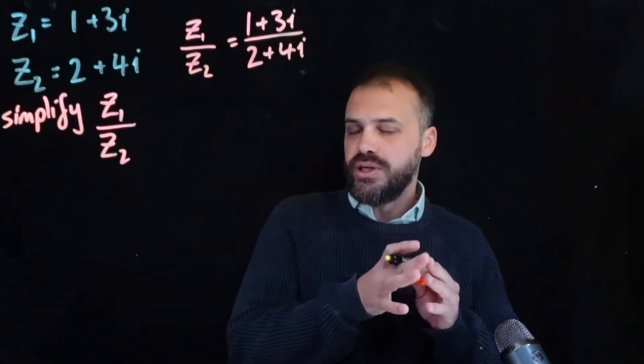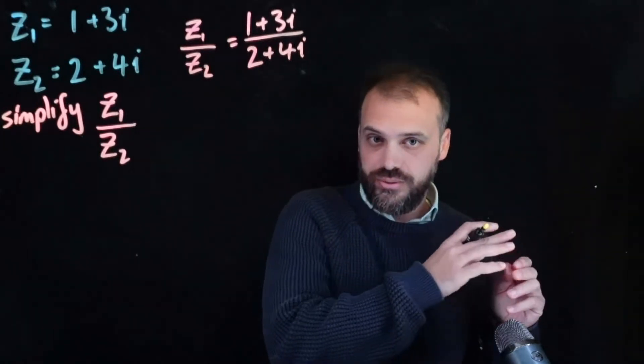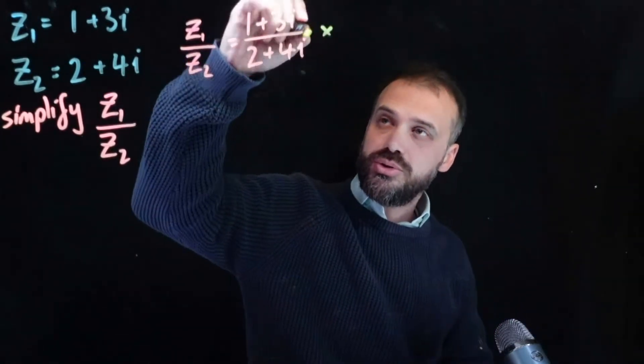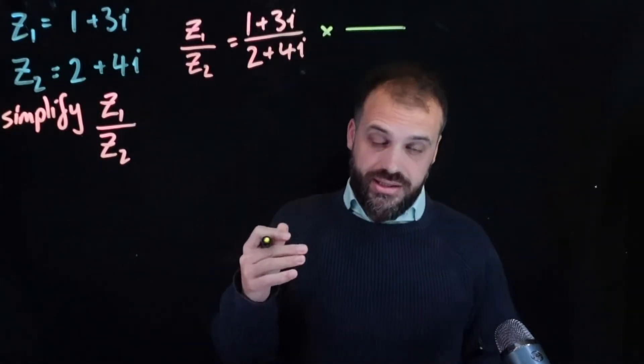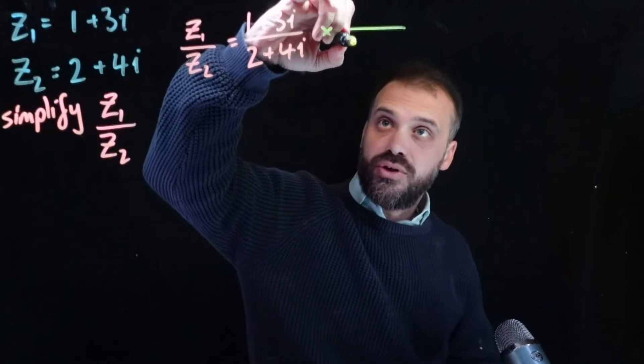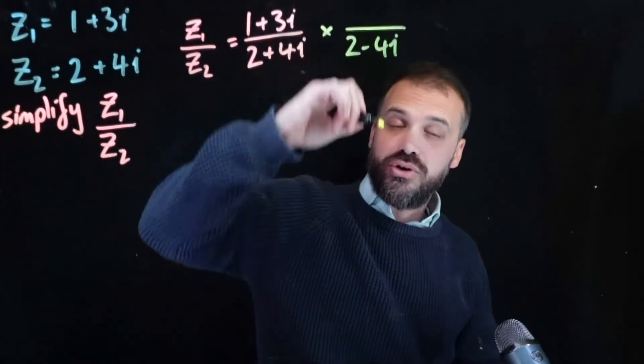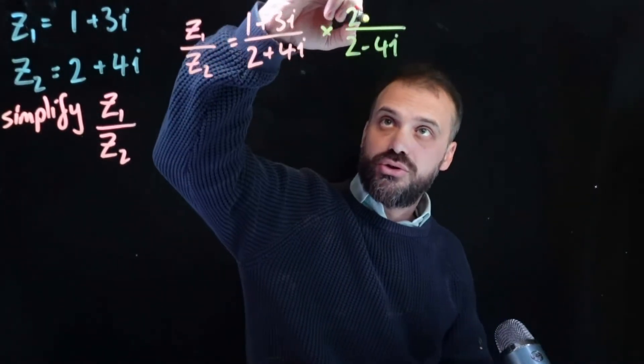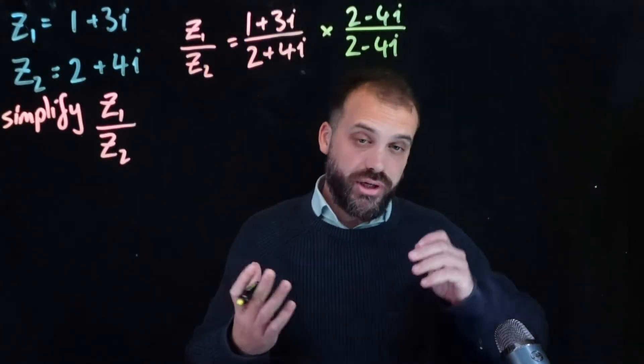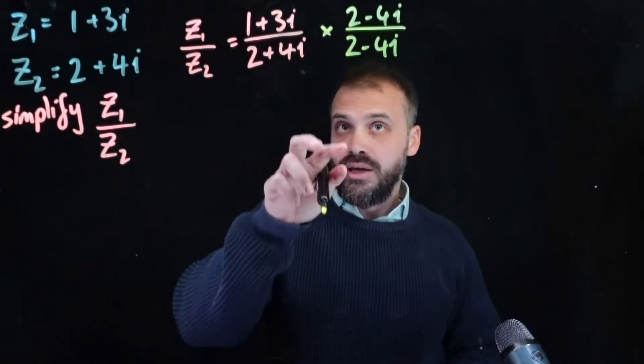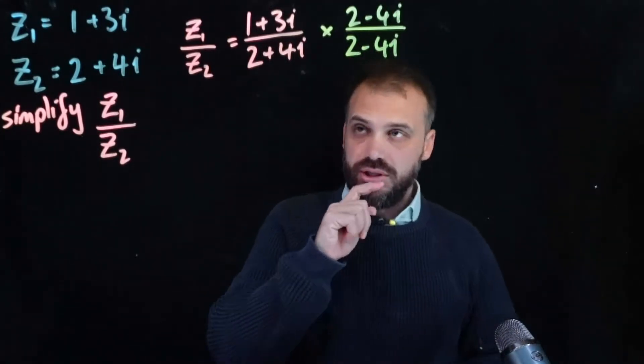And this is where we can now use our conjugate. What we're going to do is multiply this fraction by the number 1. And that, in this case, is going to be the conjugate, 2 minus 4i, 2 minus 4i. Now, that is still the number 1, right? Anything divided by itself is 1, and we're going to multiply by this conjugate.